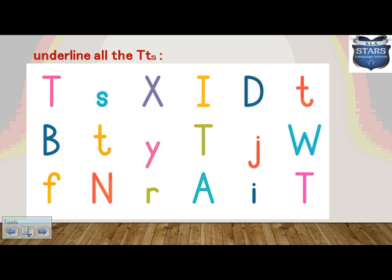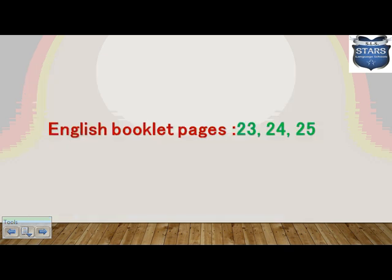Now we have many letters and we are going to underline letter T — the capital one and the small one only. Are you ready? I'll give you one minute. Let's start: here is letter T in pink, another one colored red, one down colored yellow, and one on the right side colored red too. How many do we have? Five letter T's — capital and small!